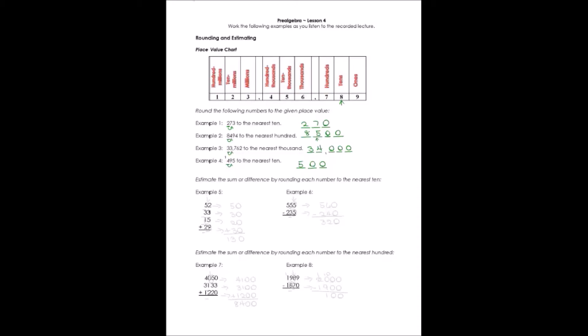What would we use this for? A lot of times it helps us add long lists of numbers fairly quickly to estimate the answer. In other words, we're going to get close to the answer. If we want to estimate the sum or difference of example 5, which is a sum, by rounding each of the numbers to the nearest 10 and then adding them together. The number we're going to be rounding to is in the tens place. The column we're going to be looking at is in the ones place.